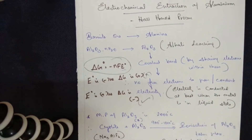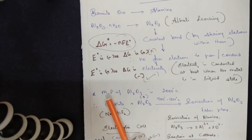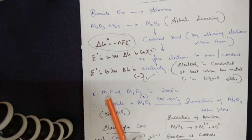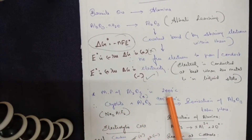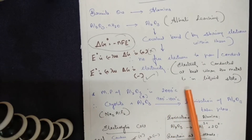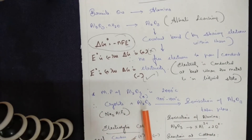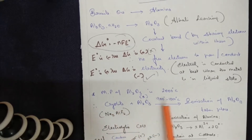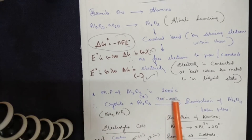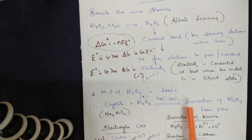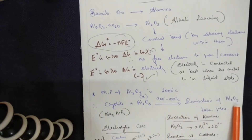We need to extract pure aluminium, so we begin by melting alumina. However, the melting point of alumina is 2000 degrees Celsius, which is quite high and cost-inefficient. If we mix alumina with molten cryolite, the temperature comes down to 900 to 1000 degrees Celsius. Within this temperature range, ionization of alumina takes place.